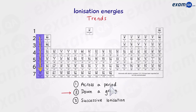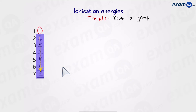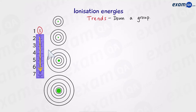We're going to start by looking at the trend down a group. In this example we'll use group one. The question is: what happens to the first ionization energy as we go down the group? For example, if we remove one electron from each of these atoms, will it get easier or harder to do so?